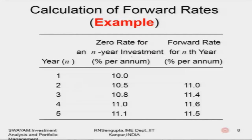Consider an example where years are integers — 1, 2, 3, 4 — with the zero rate for the end investment period given as percentage per annum: 10%, 10.5, 10.8, 11, and 11.1. We need to find the forward rate for each successive year interval, also expressed as percentage per annum, using the formula we discussed.